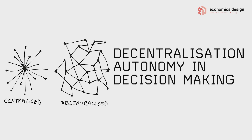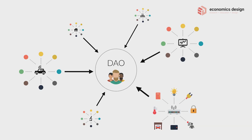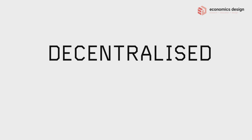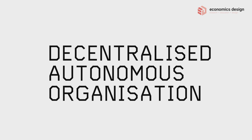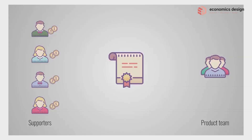So what could be the solution? One, decentralisation and autonomy in decision making. Two, automation in execution by machines whenever possible. And that brings us to DAO — Decentralised Autonomous Organisation. Whilst we mainly talk about blockchain, DAO can exist on both blockchain and non-blockchain technological stacks. It can also work in any digital platform, ecosystem or ledger. DAO is mainly a new way of governance and decision making, and it could also combine with automated execution via smart contracts.